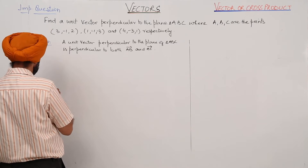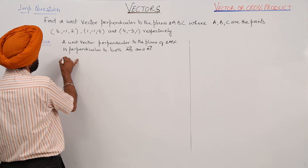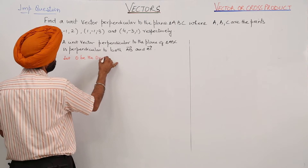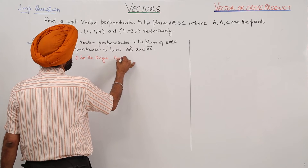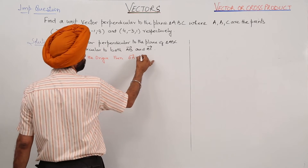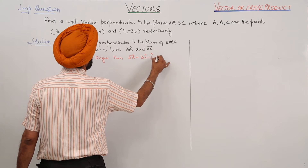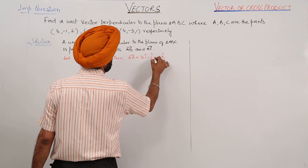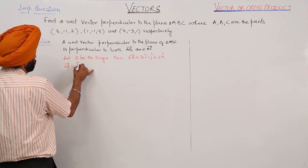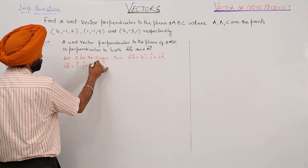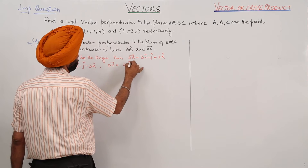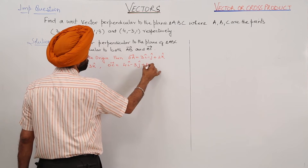Let O be the origin. Then vector OA is equal to 3i cap minus j cap plus 2k cap. Vector OB is equal to i cap minus j cap minus 3k cap, and vector OC is equal to 4i cap minus 3j cap plus k cap.